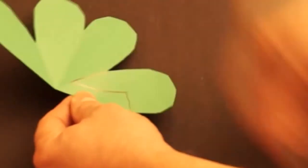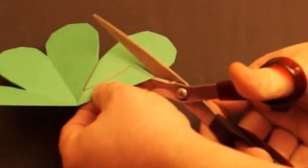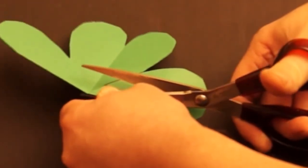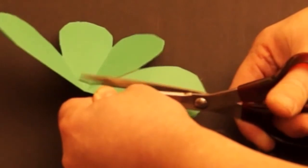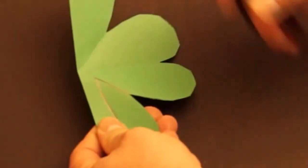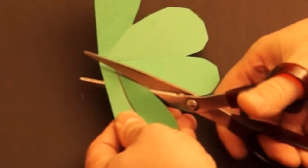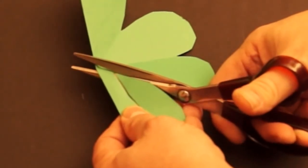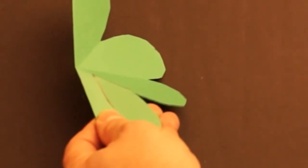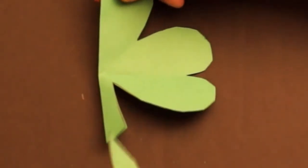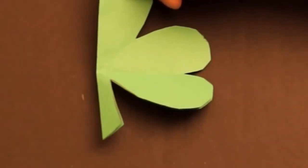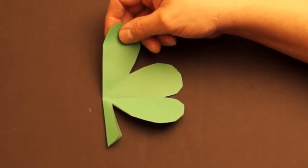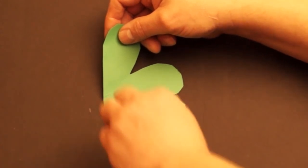Now we cut on this line. Cut the first two, and the third one is easier if we start on the outside and cut towards the middle. You can throw this part away.